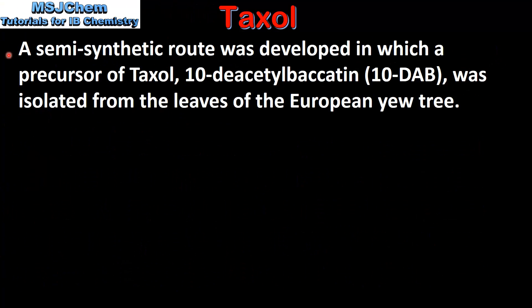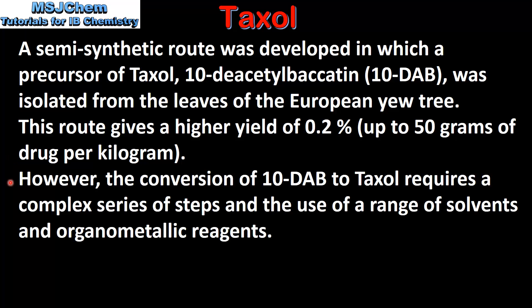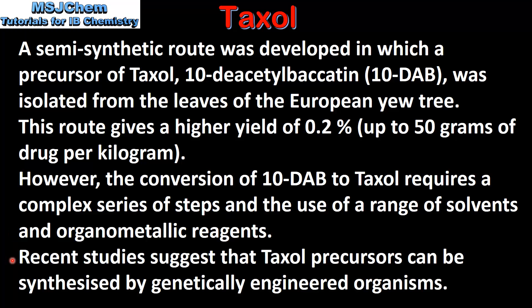A semi-synthetic route was developed in which a precursor of Taxol, known as 10-DAB, was isolated from the leaves of the European yew tree. This route gives a higher yield of 0.2%, which means that up to 50 grams of drug can be produced per kilogram. However, the conversion of 10-DAB to Taxol requires a complex series of steps and the use of a range of solvents and organometallic reagents. Recent studies suggest that Taxol precursors can be synthesized by genetically engineered organisms.